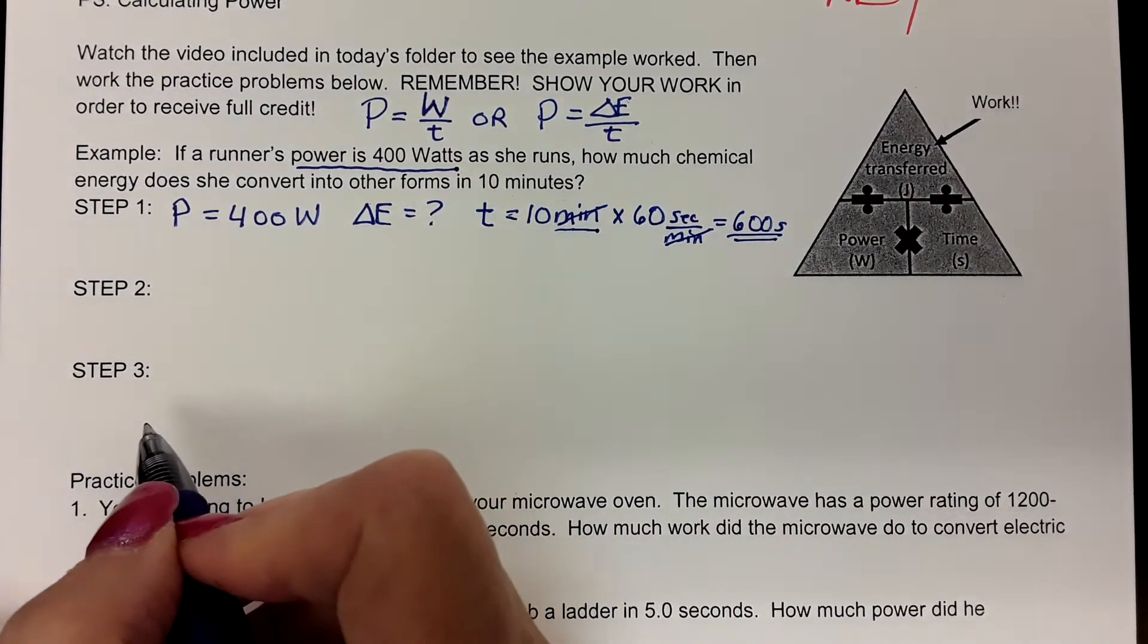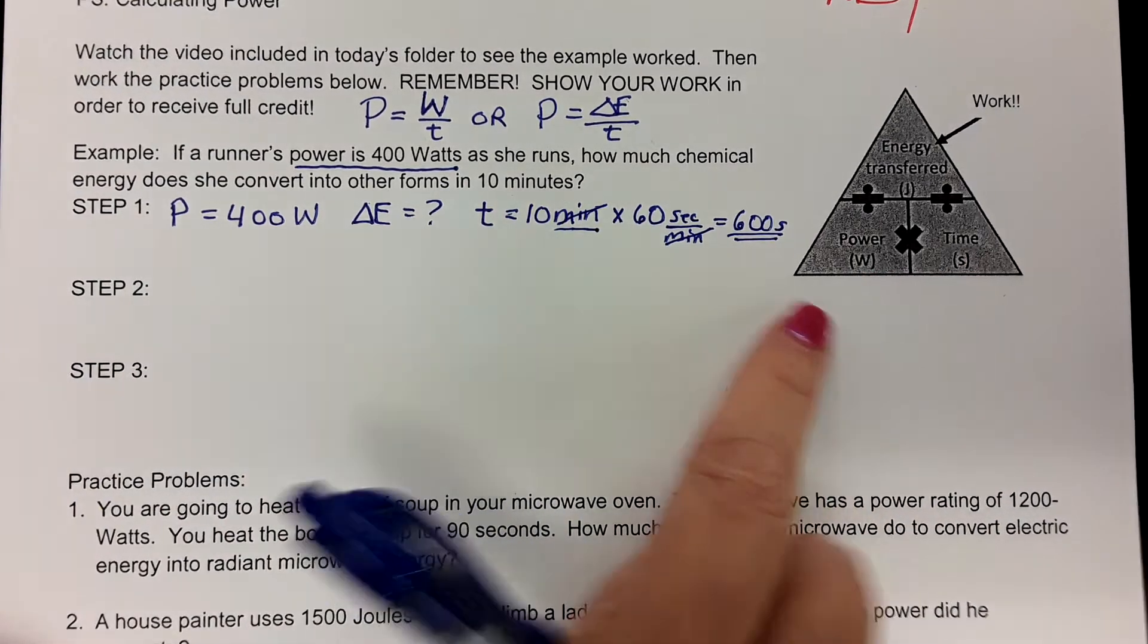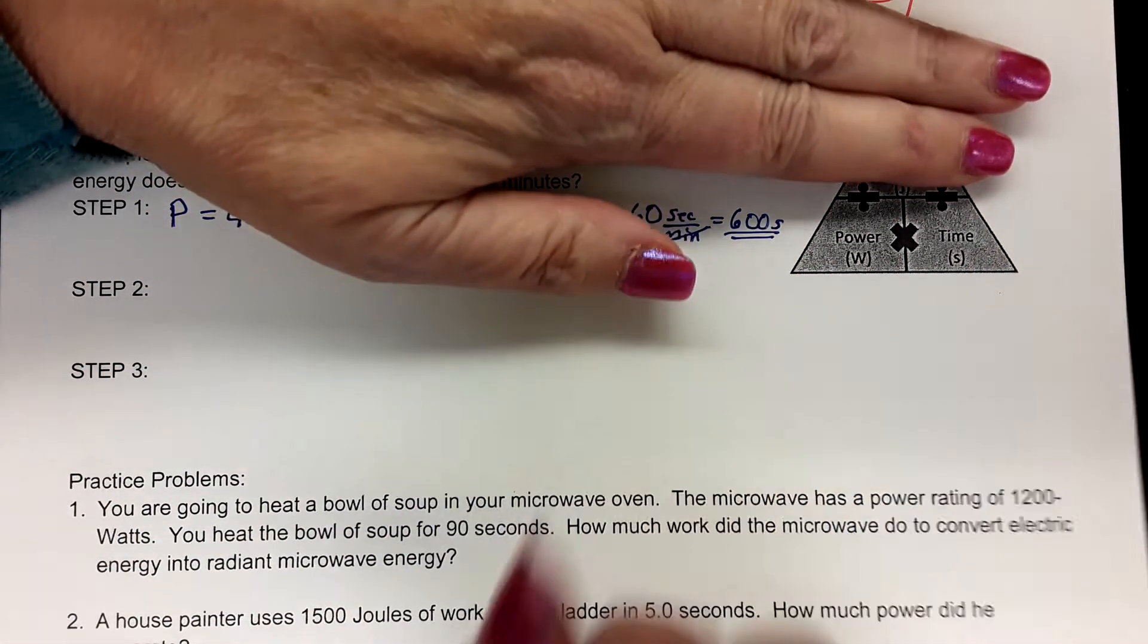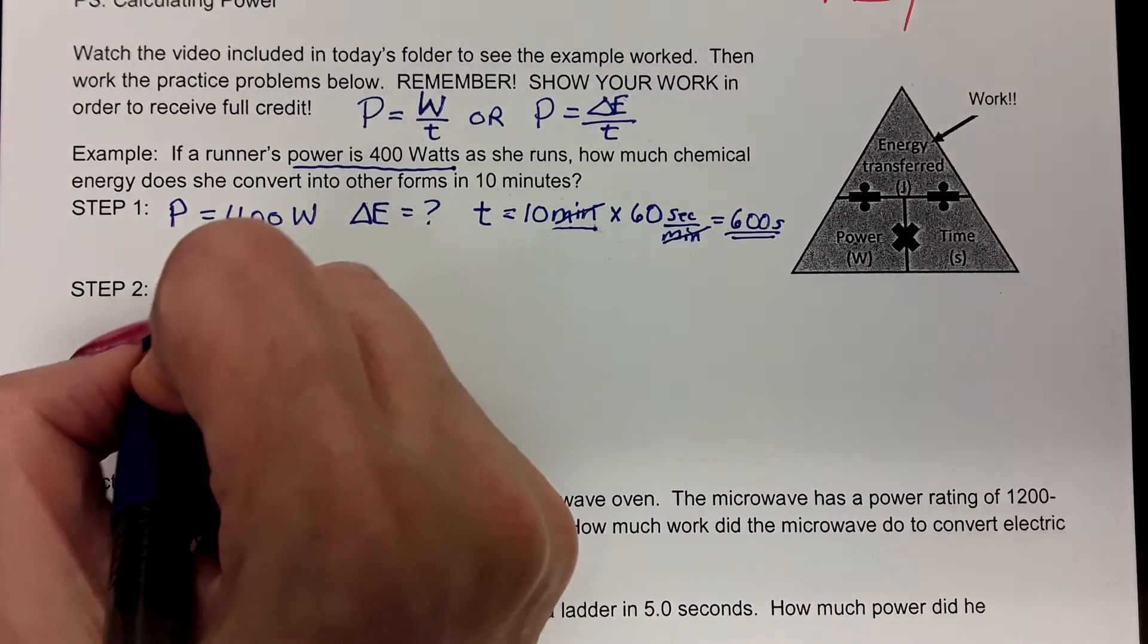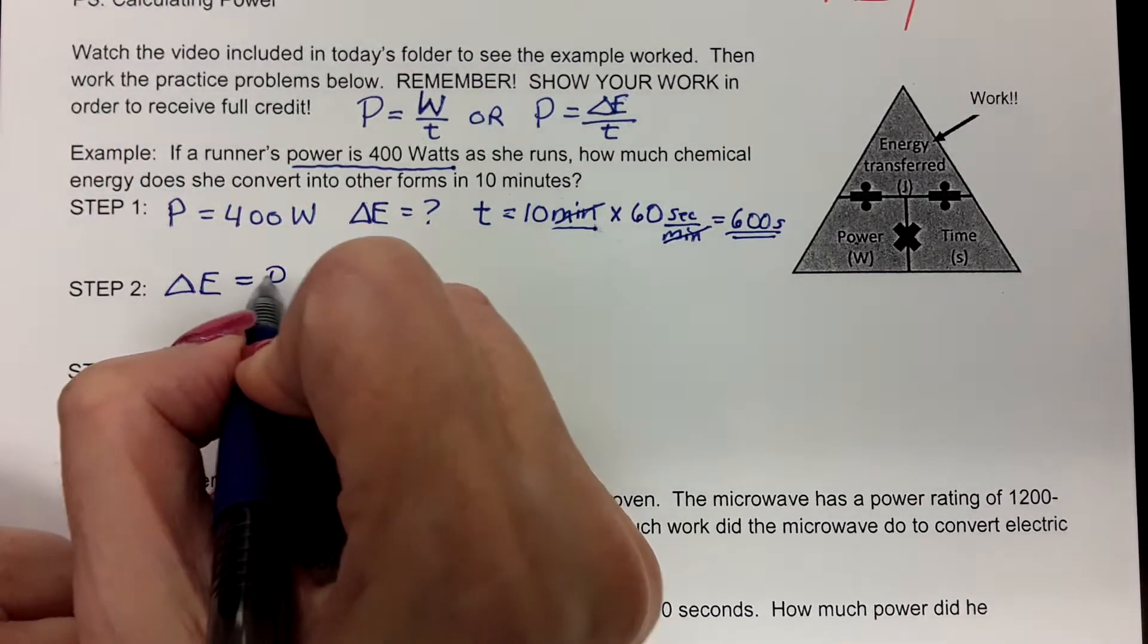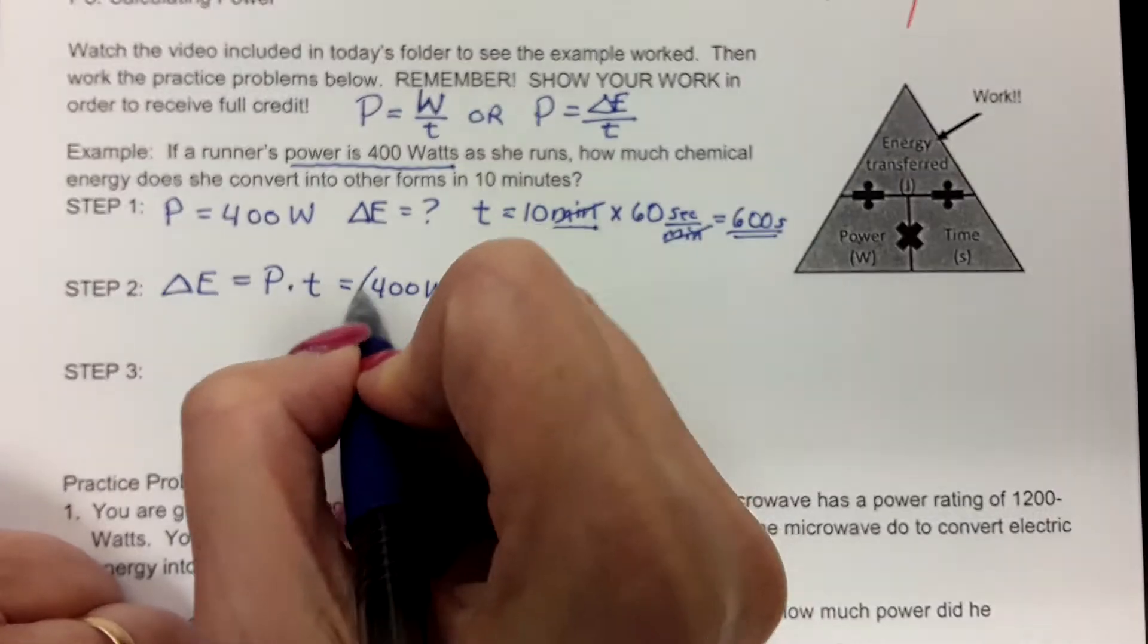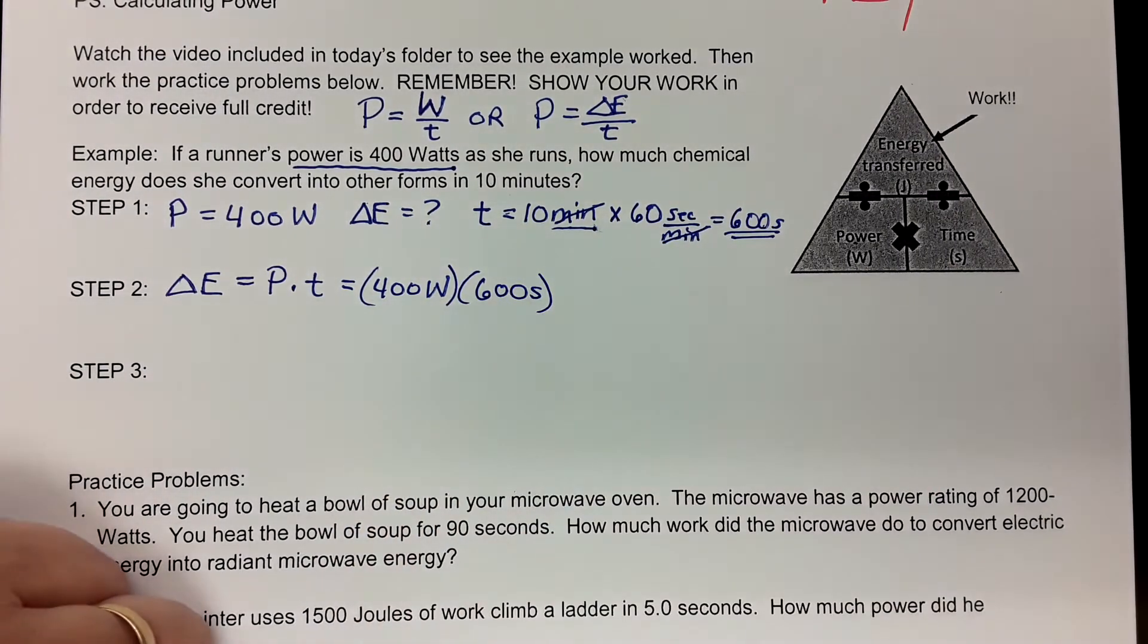Now that we've got it in seconds, we can find the power. Since we want the energy converted or transferred, we're going to cover that up, and we have to say power times time. So I'm going to say delta E, the converted energy, equals the power times the time. And that way we get 400 watts times our 600 seconds.